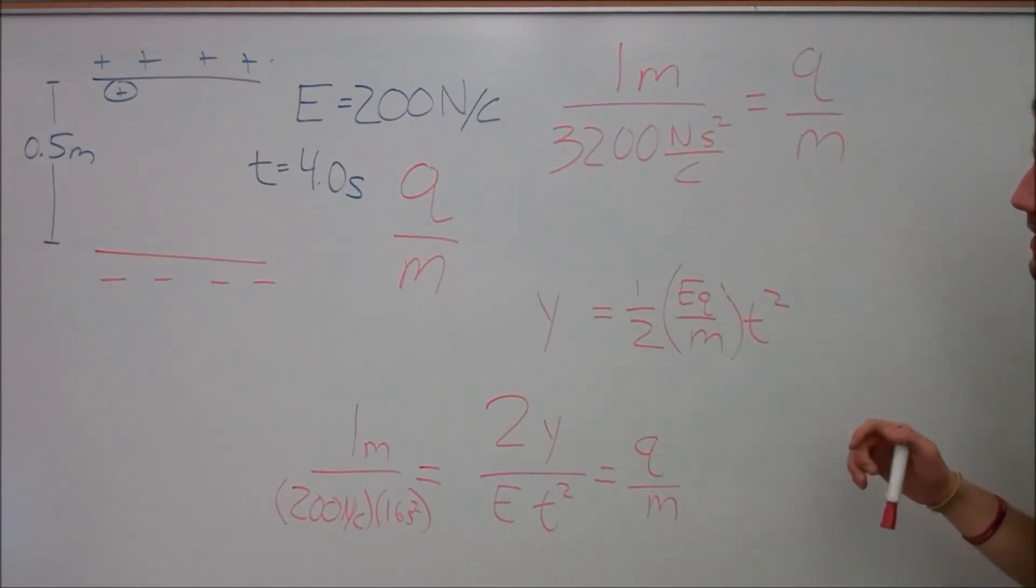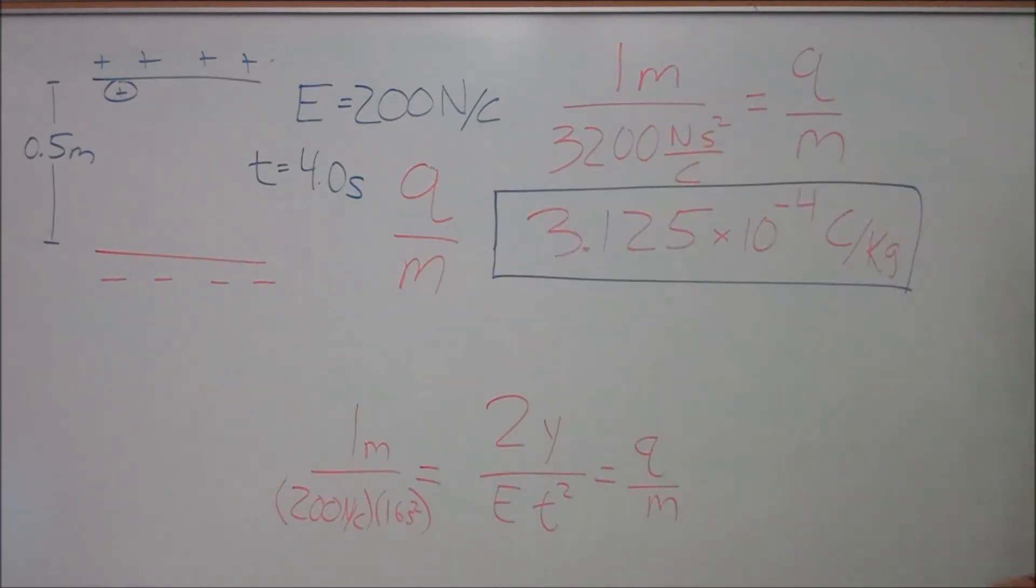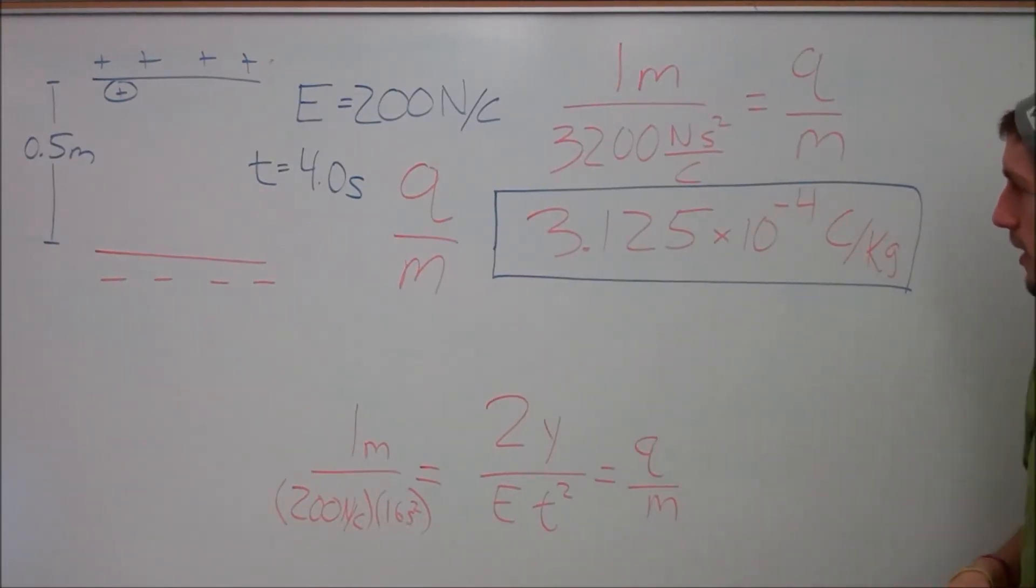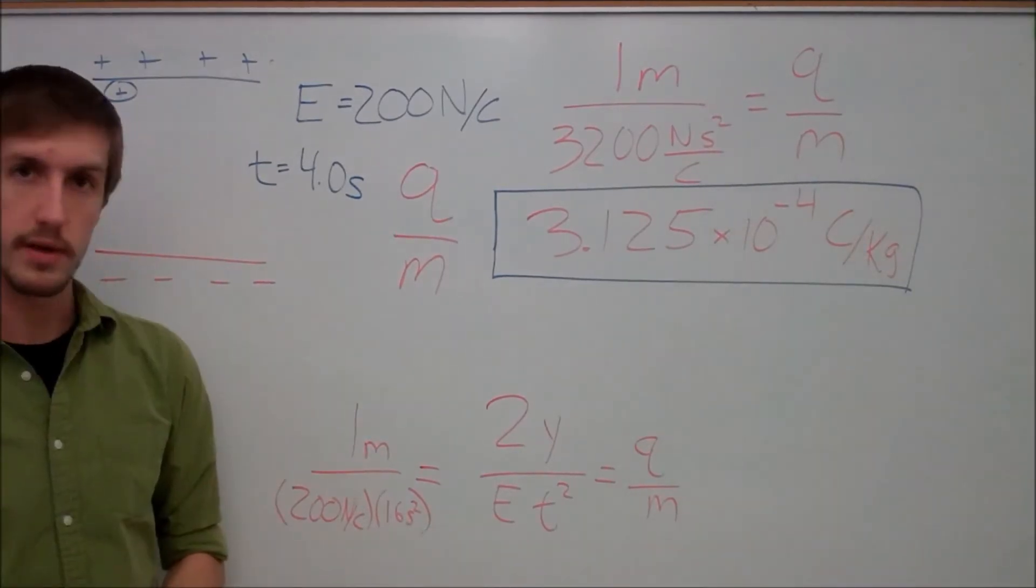Where I now have 1 meter over 3200 newtons times seconds squared all over coulombs. And that simplifies down to our final answer ending up becoming 3.125 times 10 to the negative 4th coulombs per kilogram. So for every kilogram that I have, I need 3.125 times 10 to the negative 4th coulombs of charge. Fantastic. Nice job.